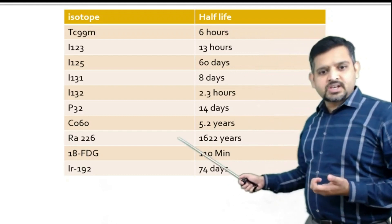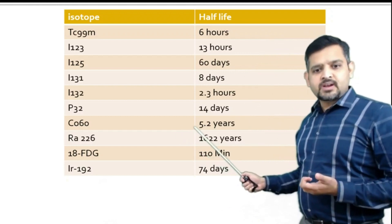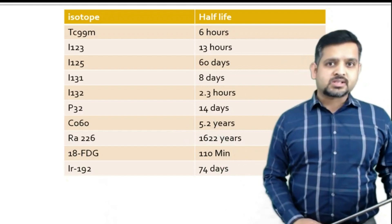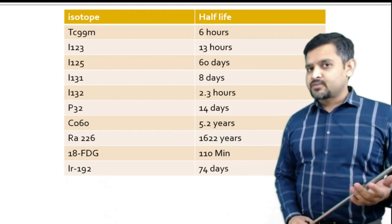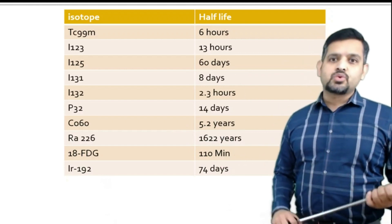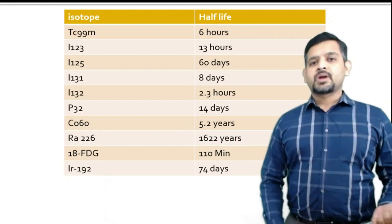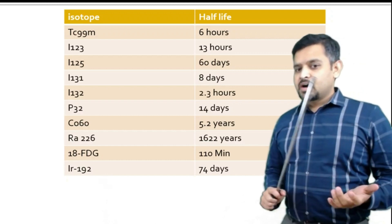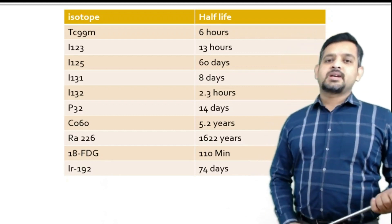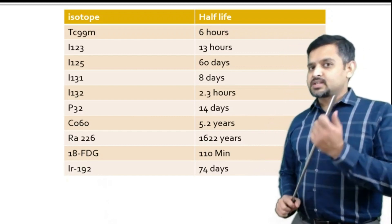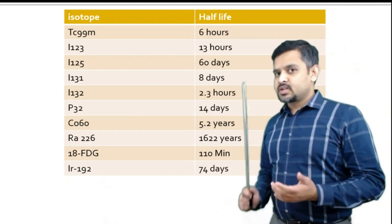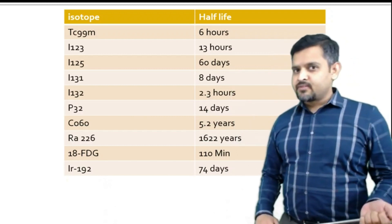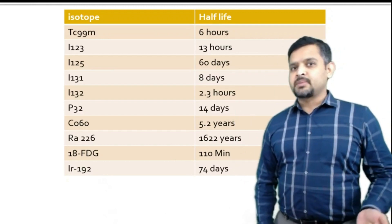Cobalt-60 has a half-life of 5.2 years, whereas radium-226 has a half-life of 1622 years. 18-FDG has a half-life of 110 minutes, whereas iridium-192 has a half-life of 74 days. So these are important half-lives, covered in less than a minute.